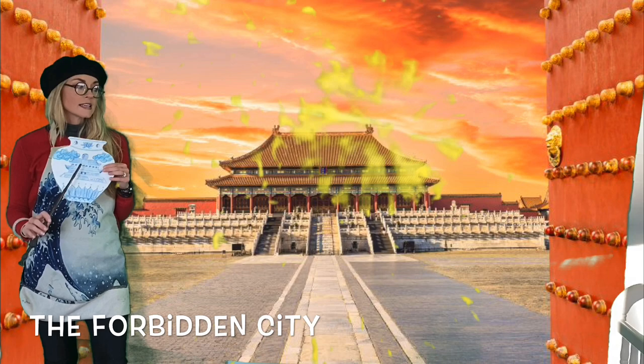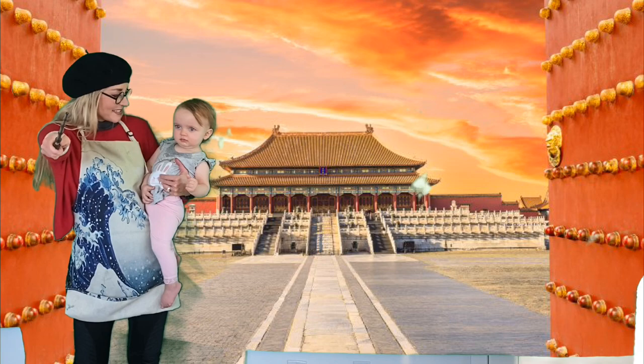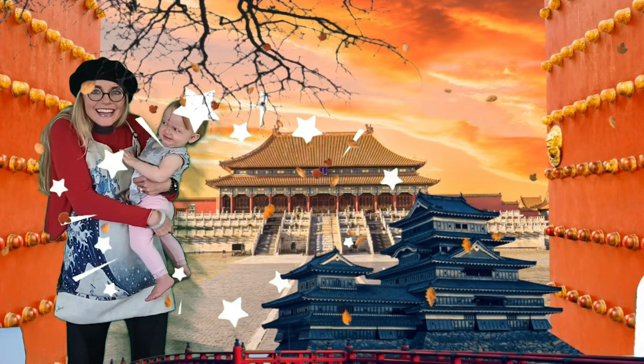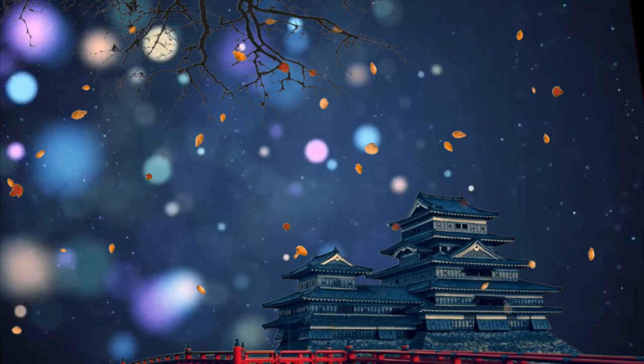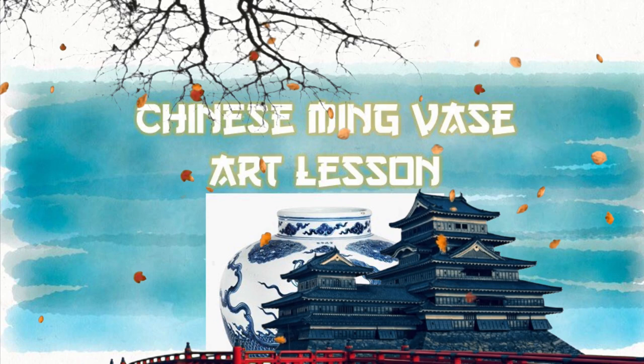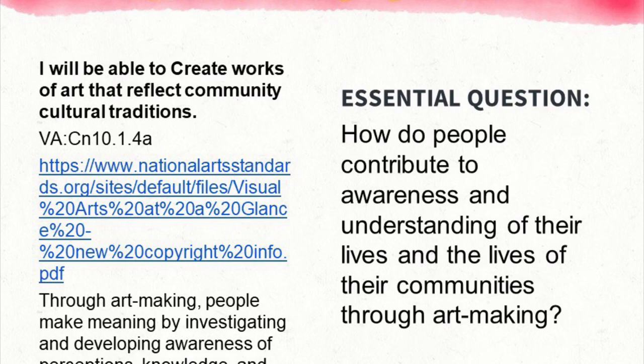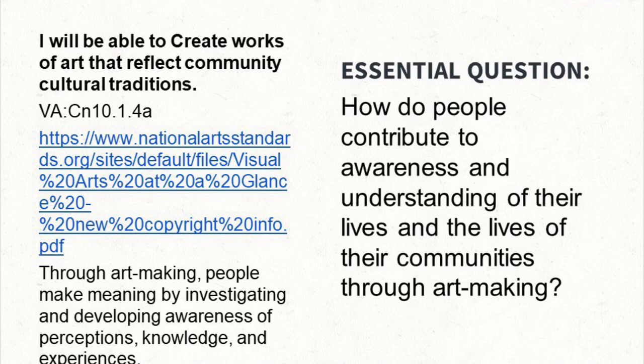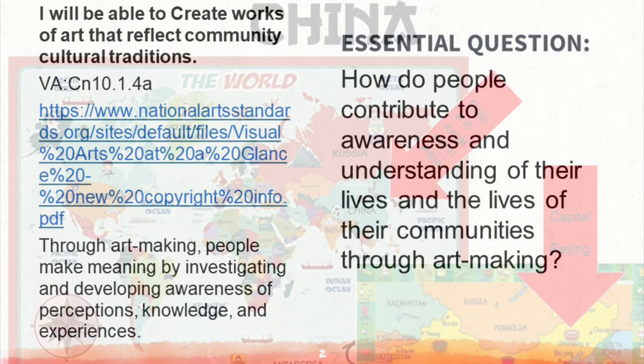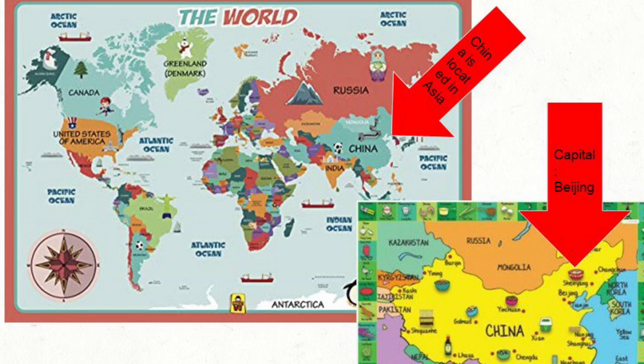Are we ready to travel back in time to the imperial Forbidden City? Close your eyes and poof! Our learning goals are that you will be able to create works of art that reflect community cultural traditions. Our essential question is how do people contribute to awareness and understanding of their lives through art making. This lesson takes place on the continent of Asia, in the country of China, and the capital of Beijing.